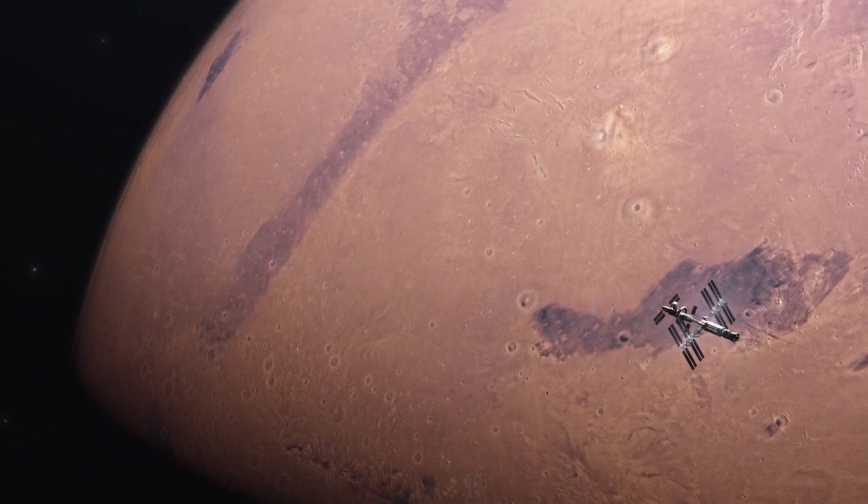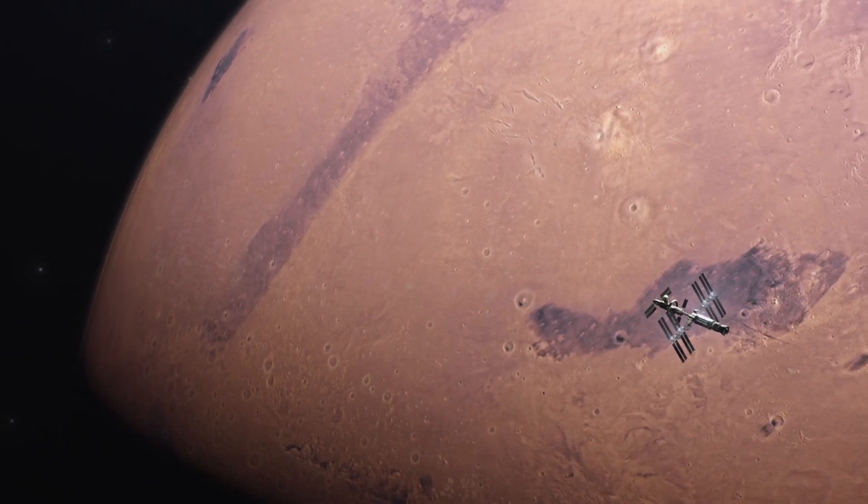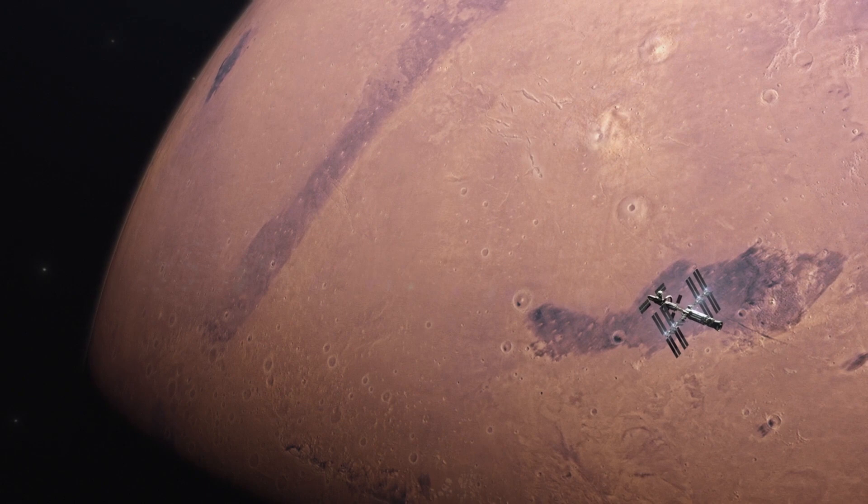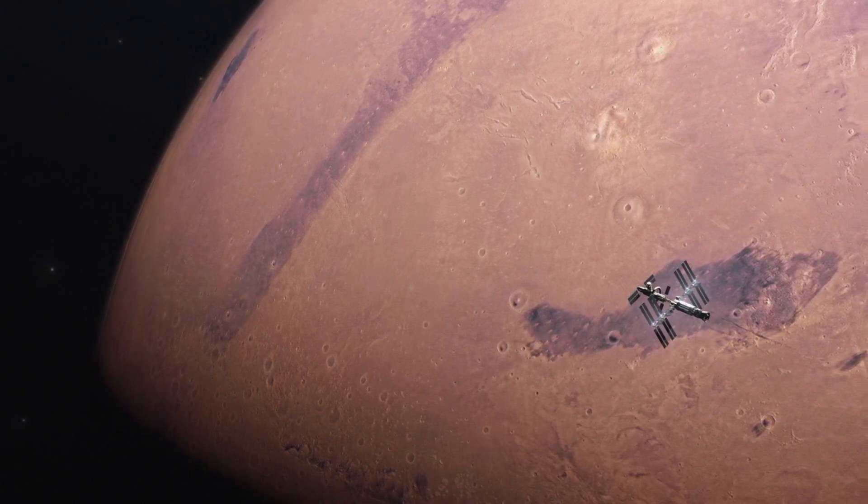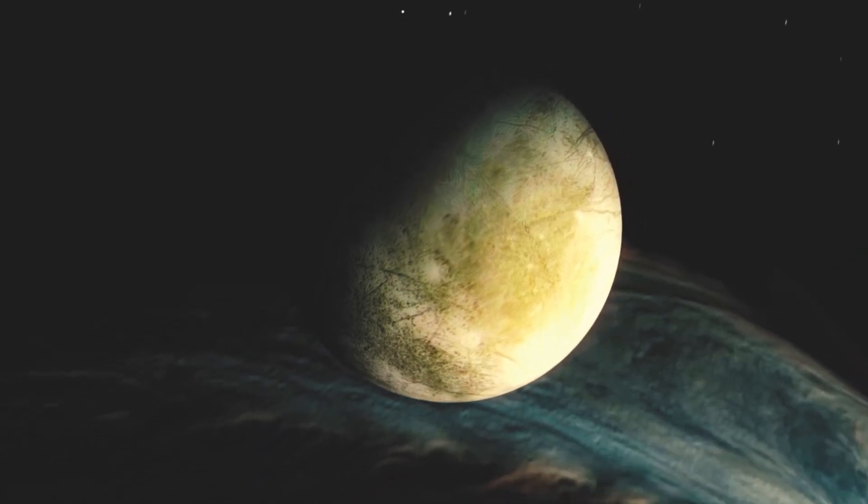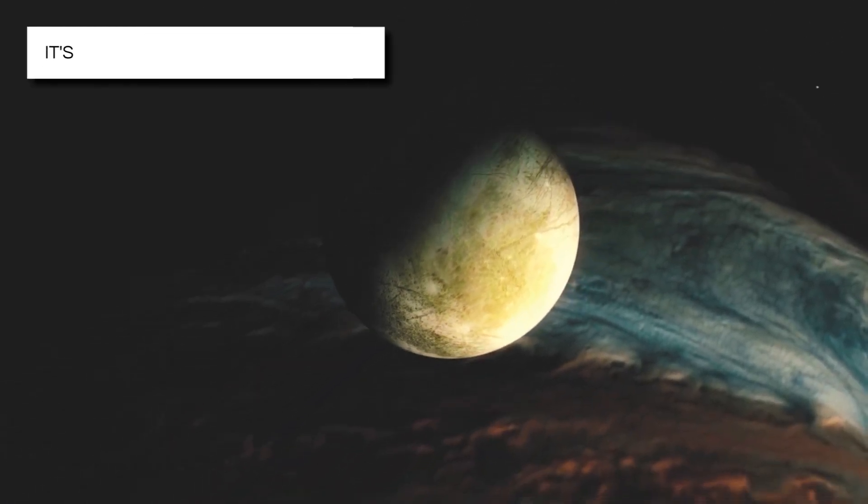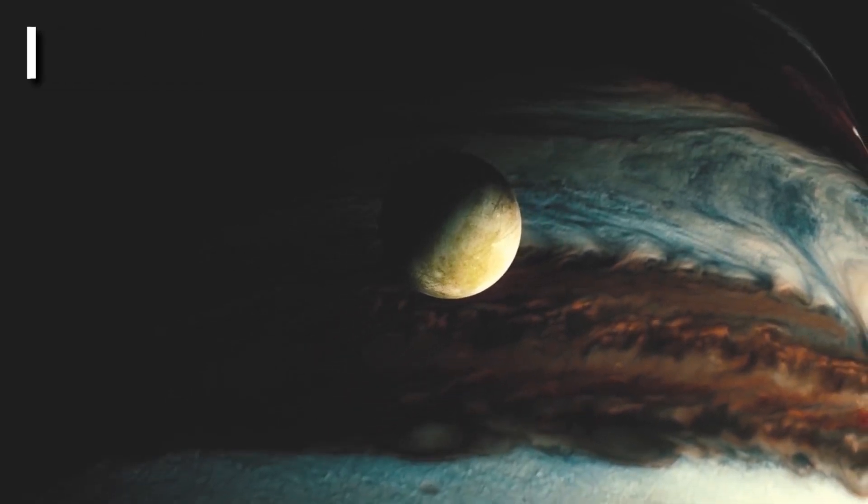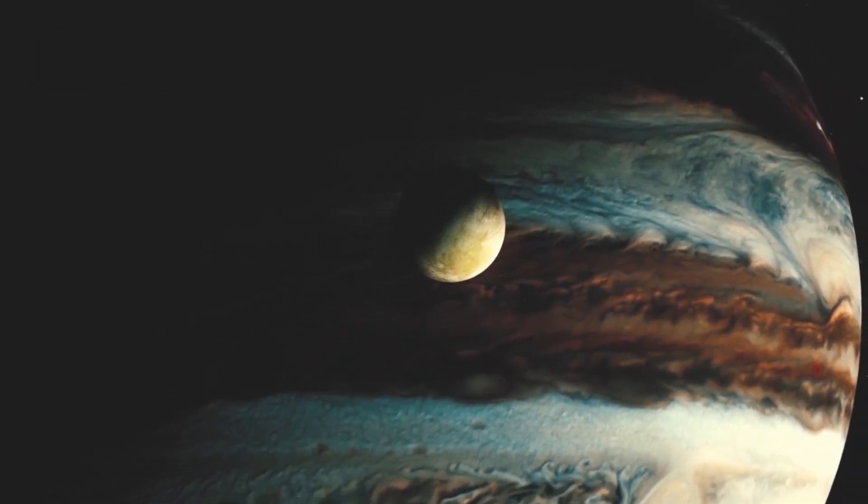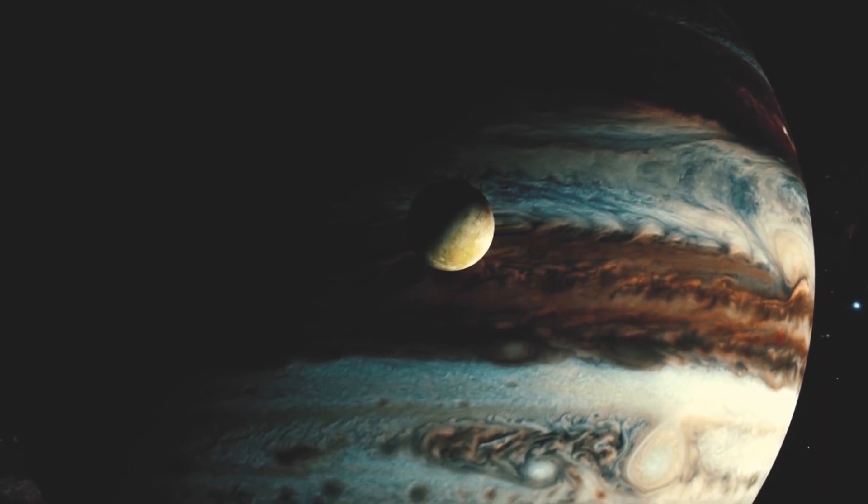Some big telescopes have been searching for it for years, but no luck. They found a few things, but they're probably just other objects, not the planet we're looking for. Why is it so hard to find? Well, it's likely a small, super-cold planet that doesn't give off much light. So it's like trying to find a needle in a cosmic haystack.